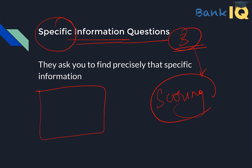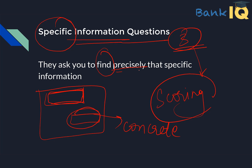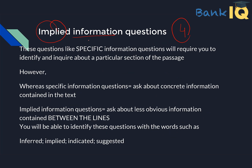What are specific information questions? You have to go and take that part of the passage where the question is asked, and take concrete facts from there, and see the option choices. Specific information questions are trying to find precisely that specific information. They are very scoring. These questions ask for concrete information — you have to go to that particular section.